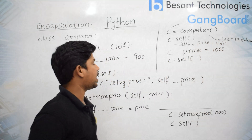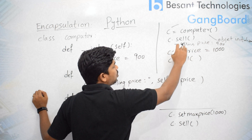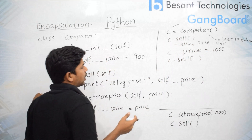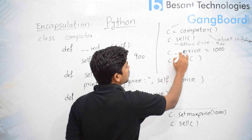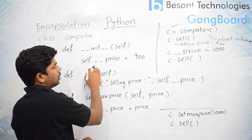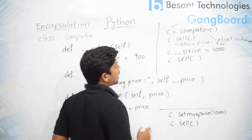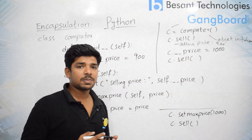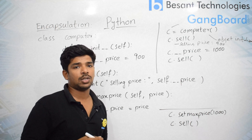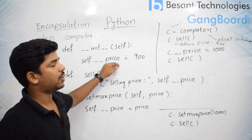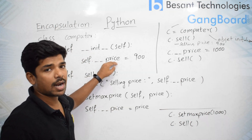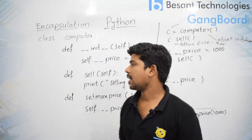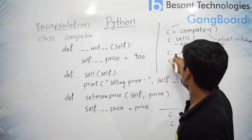The output will be selling price 900. Using this, I am unable to do any changes — I have just initialized and I am printing it. Now let's check whether I am able to change the value or not. I write C dot underscore underscore price equals to 1000. But as it is defined with double underscore, it is encapsulated. To encapsulate a value we need to use double underscore before the variable, before the identifier or attribute.